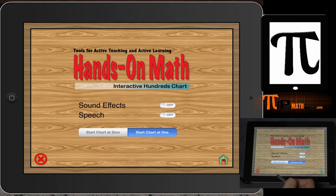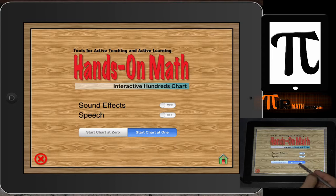This is especially important with early childhood, kindergarten, and first grade. You can start the chart at zero, and that's going to build the idea of whole numbers. The value of zero is very important in early childhood development and early understanding of mathematics, so it's very important that students explore that concept of zero.